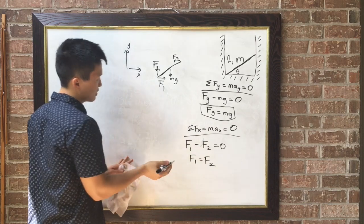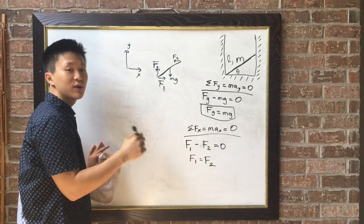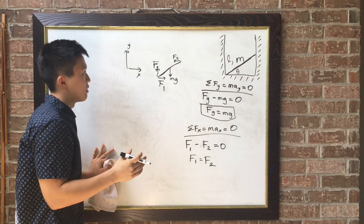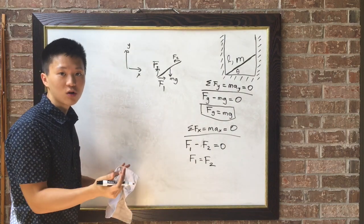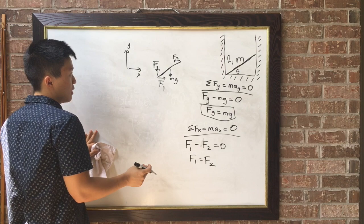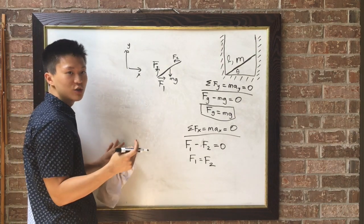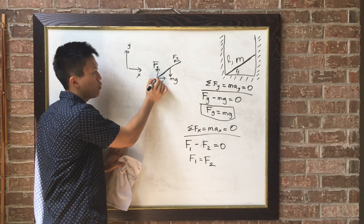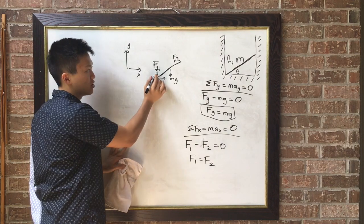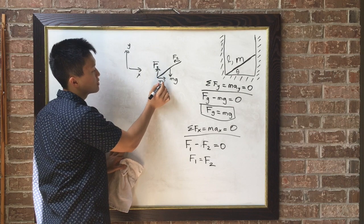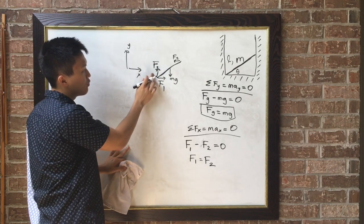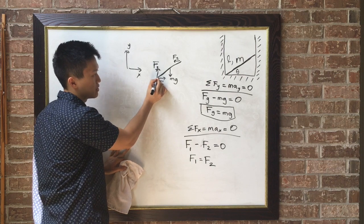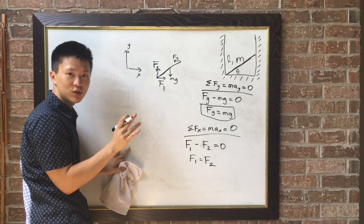So we have two equations. Now we need one more. We've already done forces now, so let's examine torques. I think what I want to do is examine the torques about this point because there are two unknowns at this point, and these two forces produce zero torque about this point, so it gets rid of two unknowns.